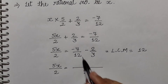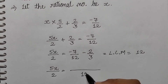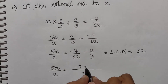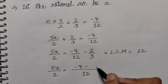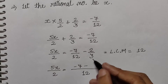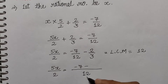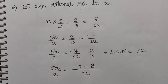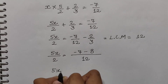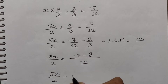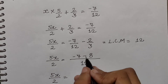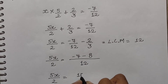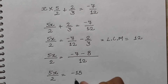LCM is 12. 12 one time is 1, so minus 7. Now 3 ki table mein 12 kitni baar aata hai — 4 times. 4 times 2 is 8, so idhar aayega 8. Now 5x upon 2 equals: minus minus plus hota hai, so 7 plus 8 is 15, and the sign is negative. So minus 15 upon 12.